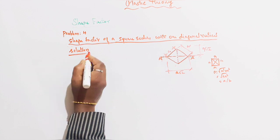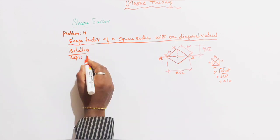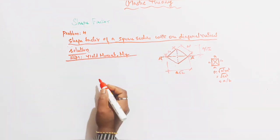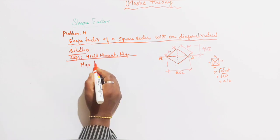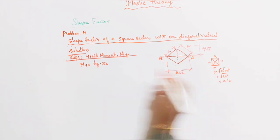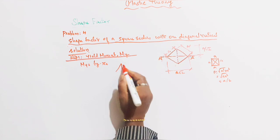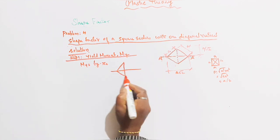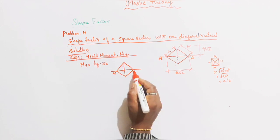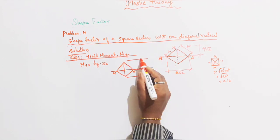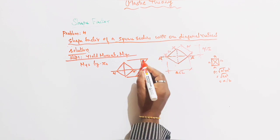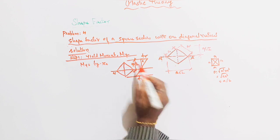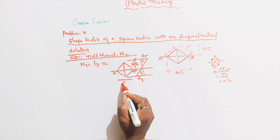Solution. Step 1: To find the yield moment, that is My. We know the equation: My = fy × Ze. Now we will look at this figure — the vertical axis — and this is the moment diagram showing compression and tension, with fy and fy. The diagonal distance is a/√2, and the full diagonal is √2·a.